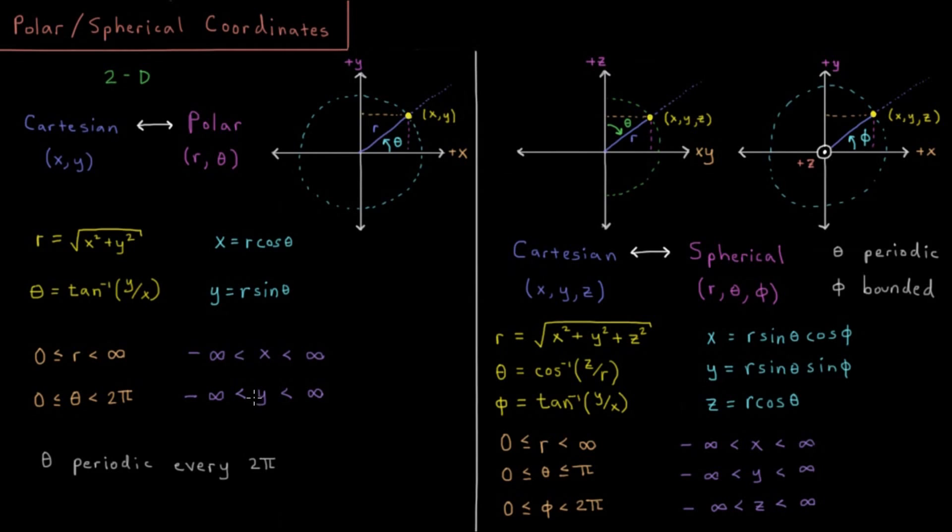In Cartesian coordinates we have x and y are unbounded. They can take on any real value anywhere between negative infinity and positive infinity for both x and y.